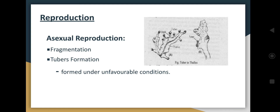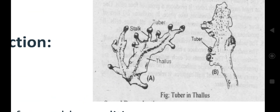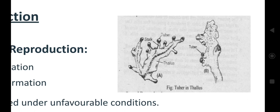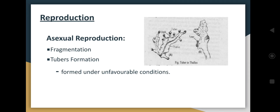Regarding mode of reproduction, they reproduce by means of sexual or asexual reproduction. Fragmentation and tuber formation are the asexual modes of reproduction. Tubers form under unfavorable conditions. In this image, we can observe the thallus, and on the stalk there is tuber formation taking place. After maturing, the tuber gets detached and grows into a new plant.